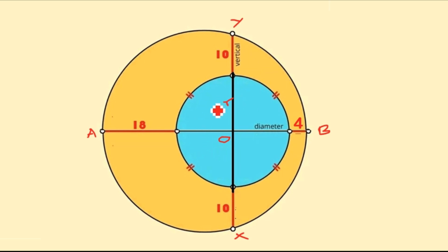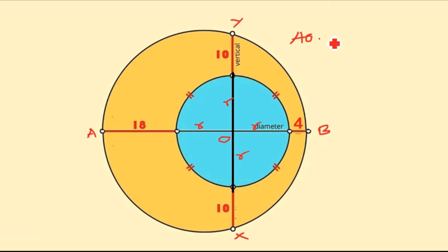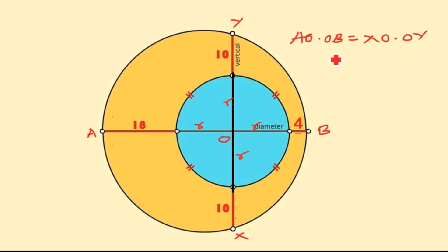Let the center of the smaller circle be O and the radius of the smaller circle be r. Each of these segments from O will have length r. The relationship between intersecting chords is: the distance from A to O times the distance from O to B equals the distance from X to O times the distance from O to Y.